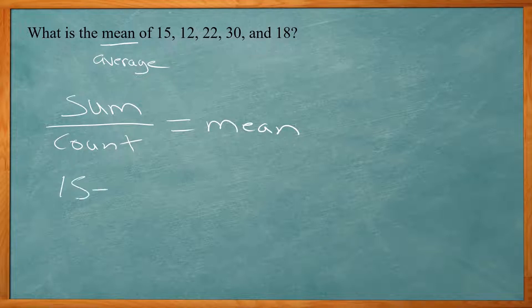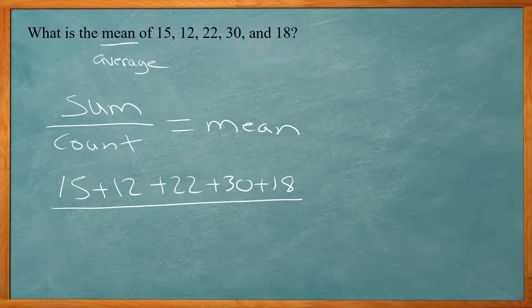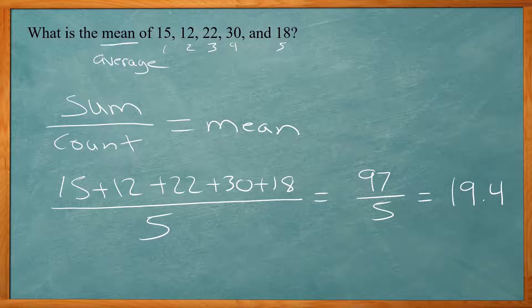Let's take the 15 plus 12 plus 22 plus 30 plus 18. How many numbers are there? 1, 2, 3, 4, 5. So our count is 5. We add these together on top. This is 97 divided by 5. You can just put that in your calculator. That gives you 19.4. So that's straightforward, like I said. So find the mean of a data set.